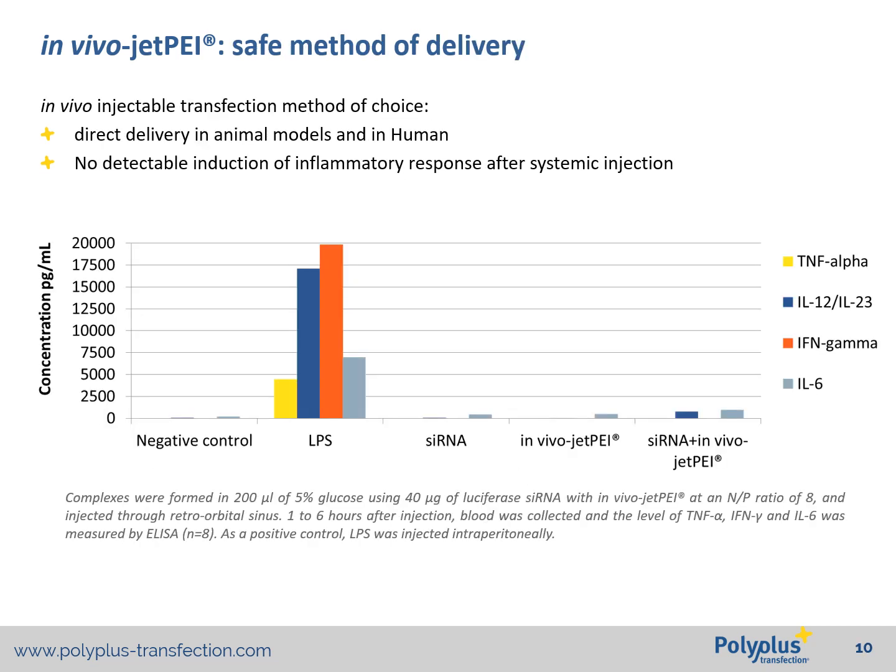Safety is of course a major concern when using directly injectable methods. This was a major concern for us because we wanted to develop a method that was safe both at the animal model level and human patient level. In vivo-jetPEI is a safe method of delivery when following our recommendations, including maximum concentration of nucleic acid that can be injected and frequency of injections. We could show in a mouse model that following systemic injection of nucleic acid via IV, the level of pro-inflammatory cytokines remained quasi-null compared to their induction following LPS stimulation.